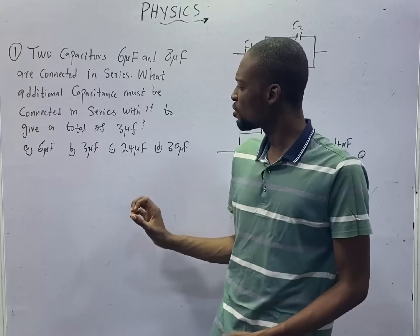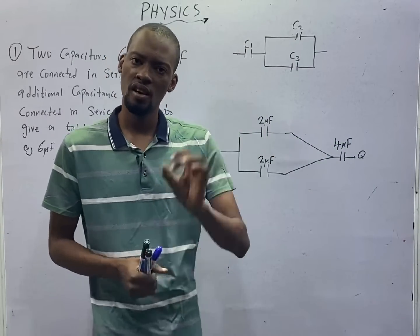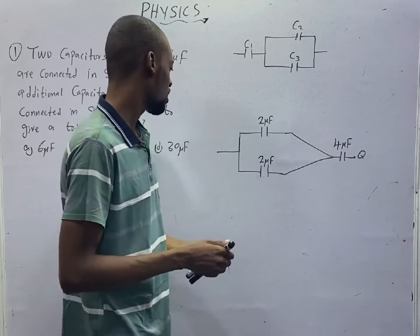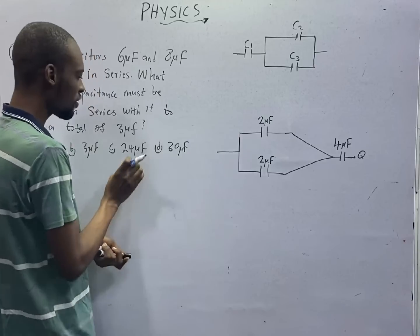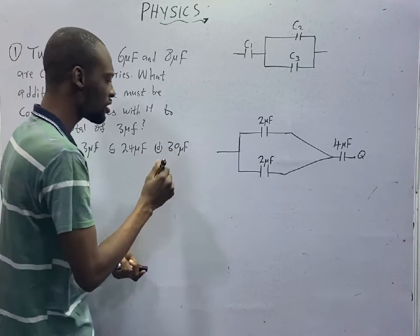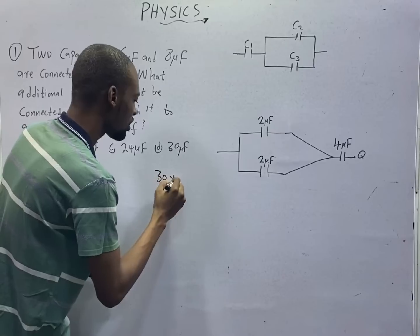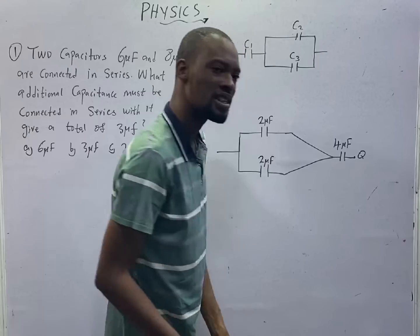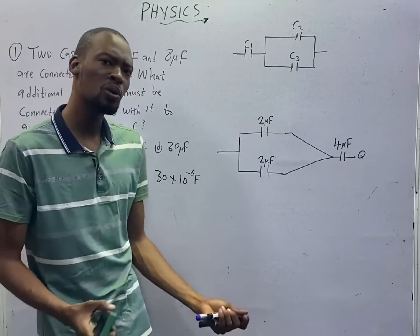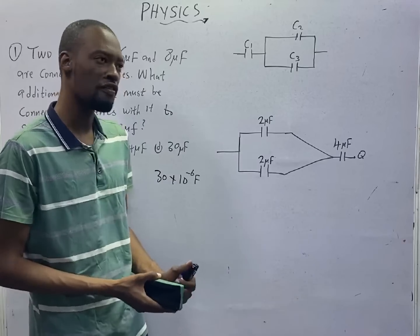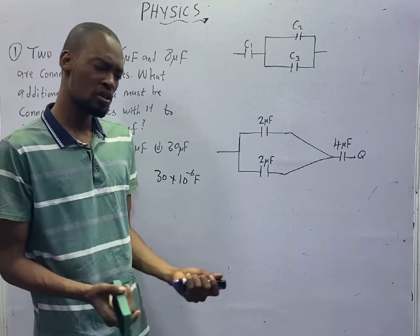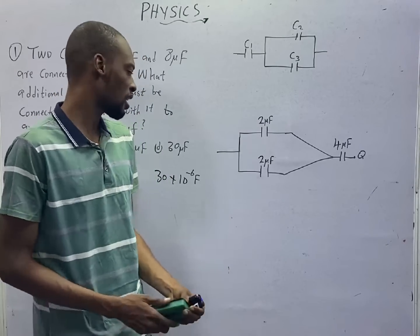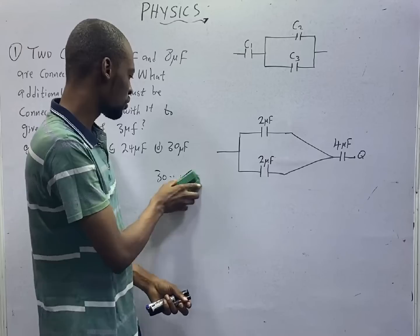The unit of capacitance is the farad. It can be in microfarad. If you are given 30 microfarad, this is 30 times 10 to the power of minus 6 farads. Micro is times 10 to the power of minus 6. Nano is times 10 raised to the power of minus 9. Pico is times 10 raised to the power of minus 12, and so on.